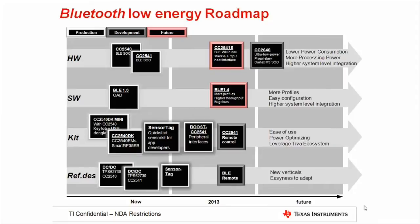Let's take a look at the roadmap, which is divided into four sections. First is the hardware, the core of the Bluetooth Low Energy solution. We currently offer two different devices: the CC2540 with USB interface, and the CC2541 with I2C interface and optimized power consumption. On the roadmap, we have the CC2541S wireless network processor simplifying the host interface, and the CC2640 offering much lower power consumption, more processing power, and higher system-level integration.